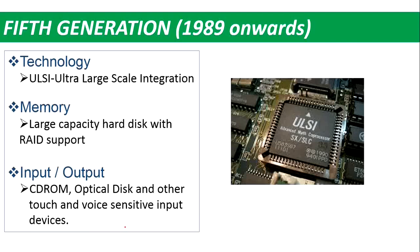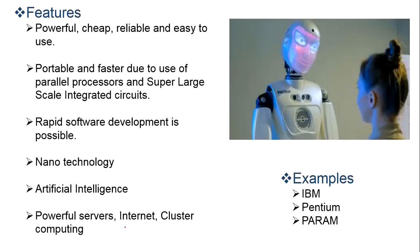From 1989 onwards, we are in the fifth generation of computers. There are ultra-large-scale integrated chips. Memory storage capacity is virtually unlimited with RAID support. Touch and voice-sensitive input devices are developed, such as voice recognition used in mobile phones. Fifth generation computers are very powerful, reliable, easy to use, portable, and faster, because parallel processors and super-large-scale integrated circuits are used, and software development is very fast.